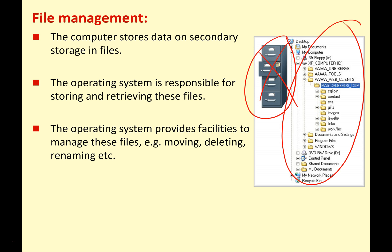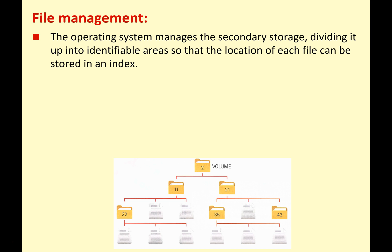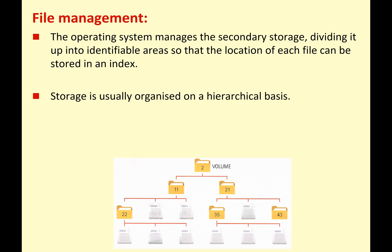The OS lets users move files, delete them, rename them, and so on. The actual data — the ones and zeros — is held on secondary storage, but the way we as users access, move, and change that data is provided by the operating system. The operating system manages the secondary storage by dividing it into identifiable areas, so the location of each file can be stored in an index, meaning information can be stored and retrieved quickly. Storage is usually organized on a hierarchical basis.